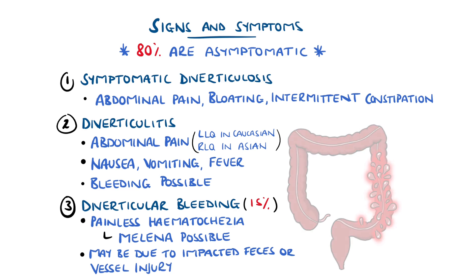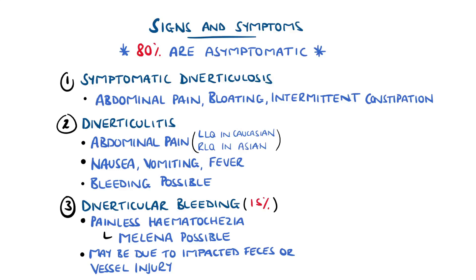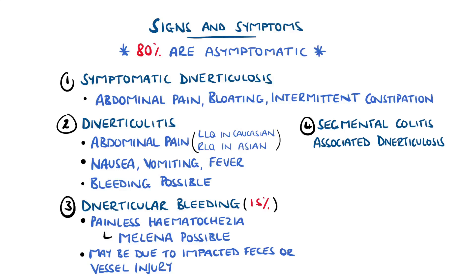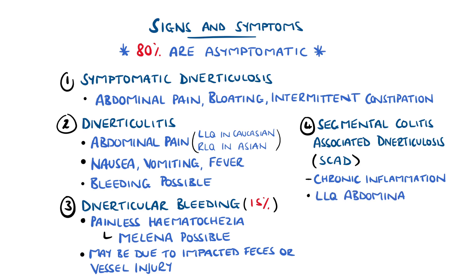Segmental colitis associated with diverticulosis is a term used to describe chronic inflammation that is attributed to the diverticulosis. This often presents with abdominal pain, again typically on the left side, diarrhoea, and haematochezia.